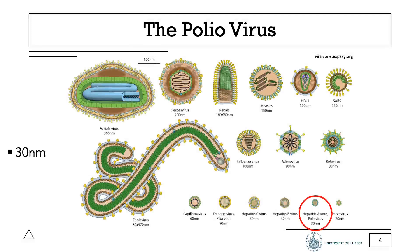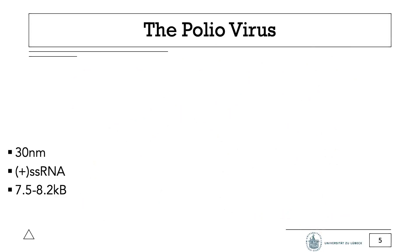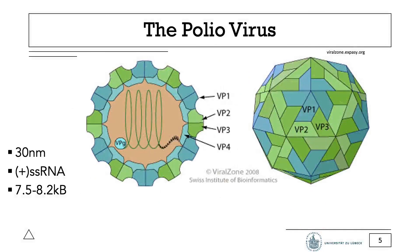It belongs to the family of Picornaviridae. It's a rather small virus, even compared to other viruses, with a diameter of 30 nm. Accordingly, its genome also cannot be too large to still fit inside the capsid. It's a single-stranded positive-sense RNA genome of about 7.2 to 8.5 kilobases.